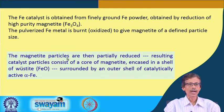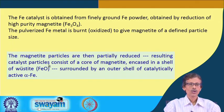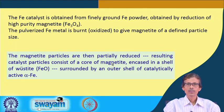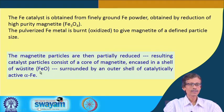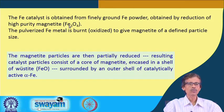If we have magnetite as good particles or nanoparticles of definite size, they can then be reduced. The reduction of Fe₃O₄ gives Fe, but the resulting catalyst particle consists of a core of magnetite. On the surface, if we carry out the reduction, we get a shell of wüstite — wüstite being FeO — due to partial reduction.